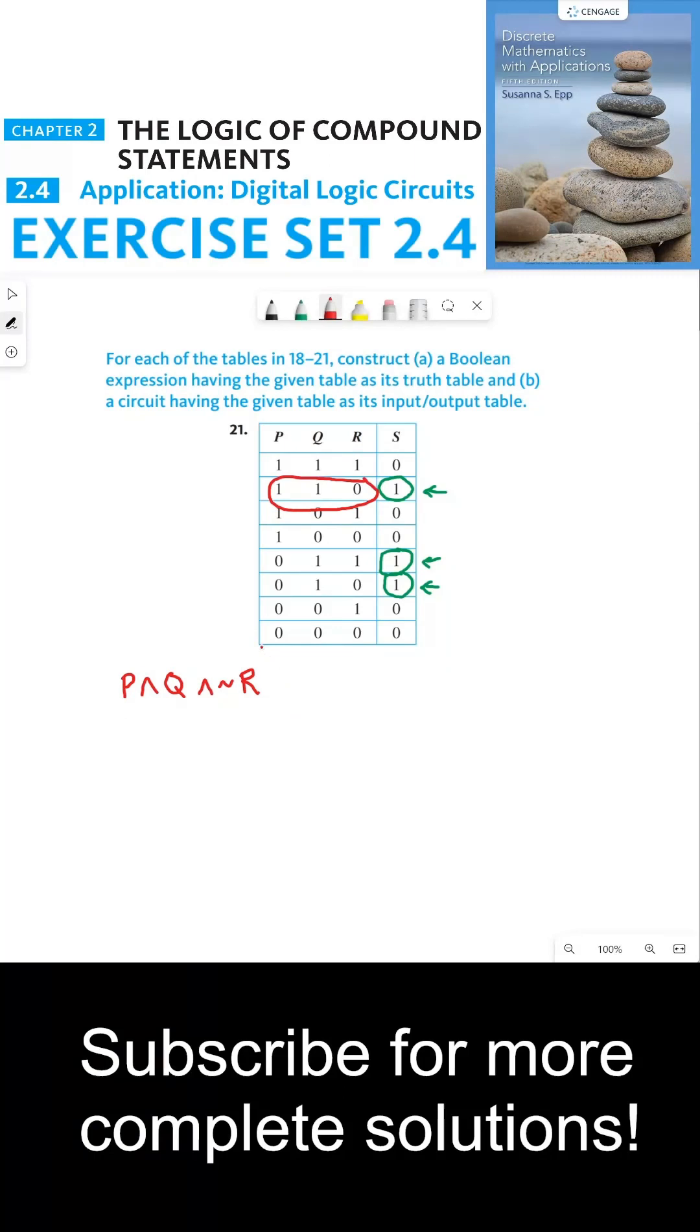So this statement form allows us to fix the output to be 1 if we have very specific input signals for P, Q, and R. There's only one way to make this statement form true. But as we said, there are three different circumstances for which the output signal could be 1.